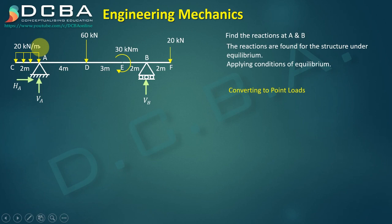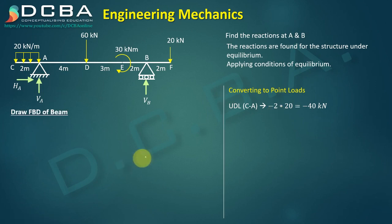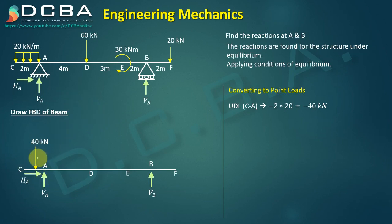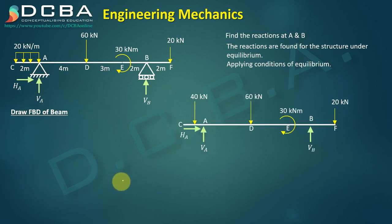The UDL from A to C: area of rectangle = minus 2 × 20 = minus 40 kN. Drawing the FBD with reactions HA, VA, VB: the 40 kN point load acts at 1 m from A (centroid at base/2 = 2/2 = 1 m). We also have a 60 kN load at D, a 30 kN·m moment, and a 20 kN load at F.